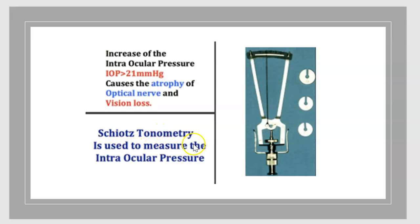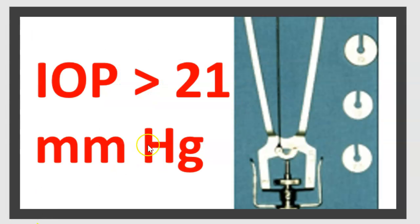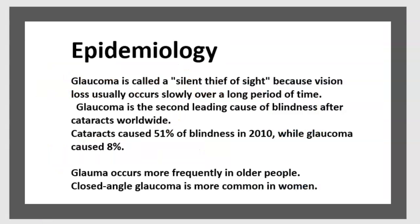Schiotz tonometry is used to measure intraocular pressure. Glaucoma is called a silent thief of sight because vision loss usually occurs slowly over a long period of time. It is the second leading cause of blindness after cataract worldwide — cataract caused 51% of blindness in 2010, while glaucoma caused 8%. Glaucoma occurs more frequently in older people, and closed-angle glaucoma is more common in women.